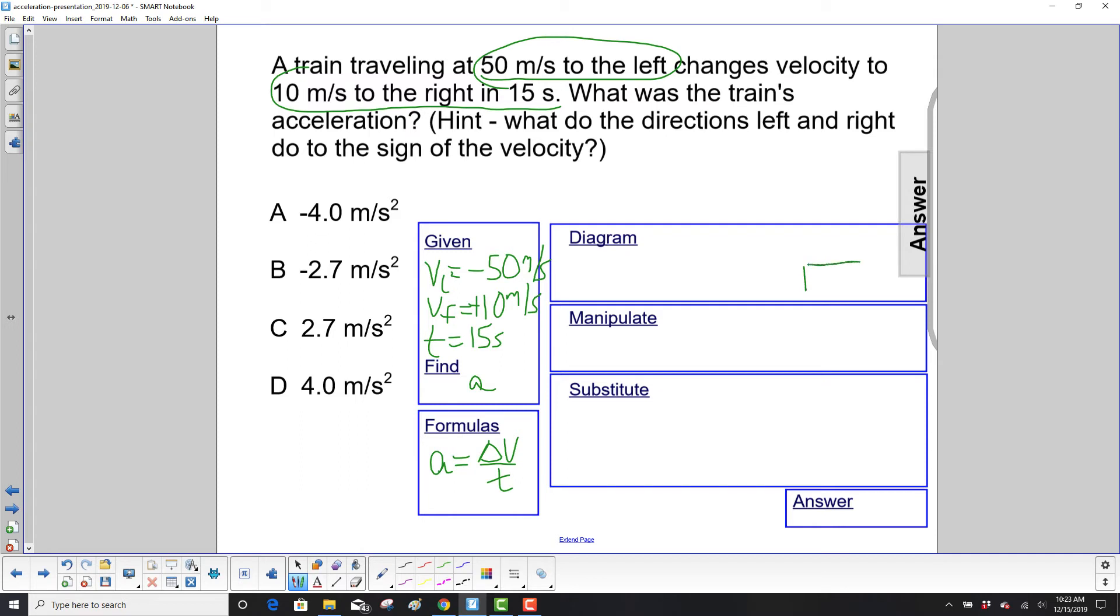And let's draw the picture here. Notice I'm starting on the right side of the box. Why? Because you're going to the left in the beginning. 50 meters per second to the left.